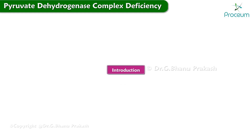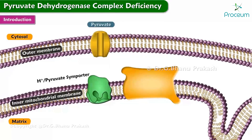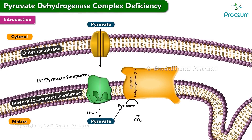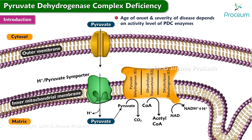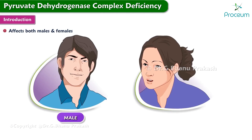Let's begin with an introduction. Pyruvate dehydrogenase complex deficiency, or PDCD, is a rare disorder of carbohydrate metabolism caused by a deficiency of one of three enzymes in the pyruvate dehydrogenase complex. The age of onset and severity of disease depends on the activity level of the PDC enzymes. PDC deficiency affects both males and females.